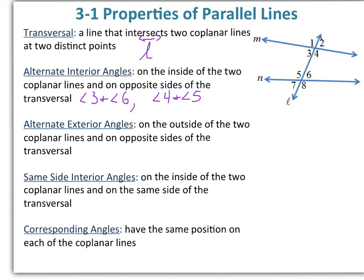Alternate exterior angles are on the outside of the two coplanar lines and on opposite sides of the transversal. Here, that would be angle 1 and angle 8, and another pair would be angle 2 and angle 7.